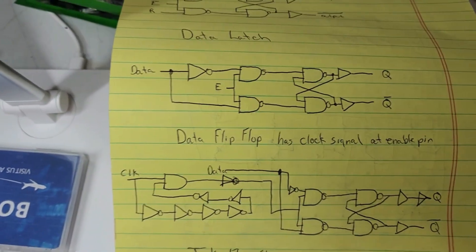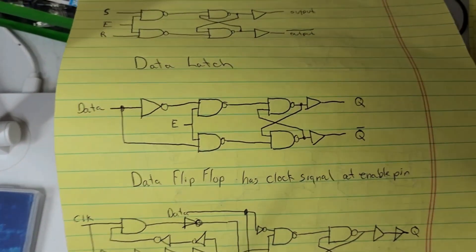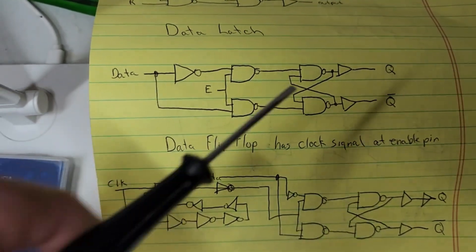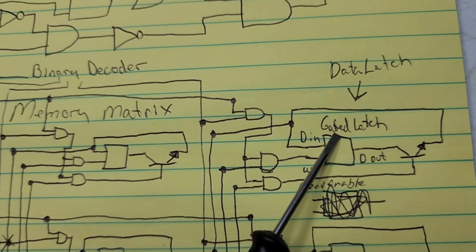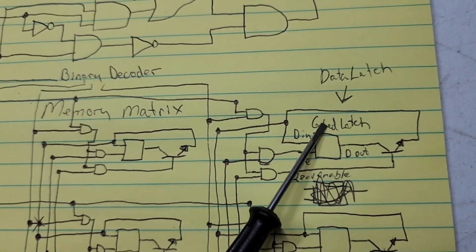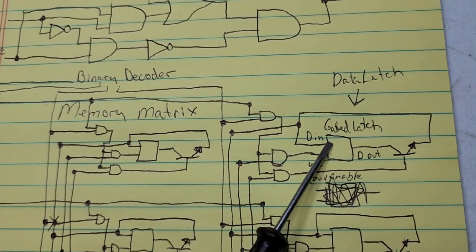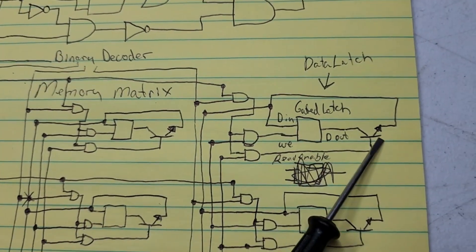So it's too hard to draw all of that inside this area here. So that's my data latch in this box. Then I added a transistor on the output for a read enable.